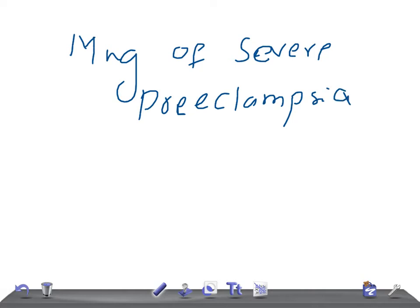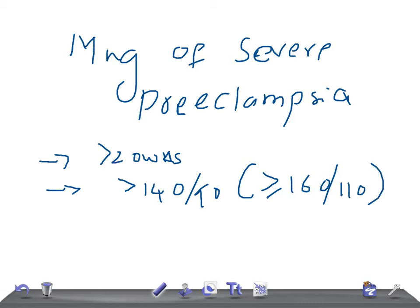What's severe preeclampsia? It's pregnancy more than 20 weeks of gestation with sustained hypertension more than 140/90, or more than 160/110.